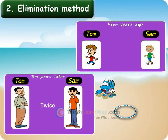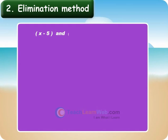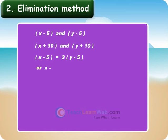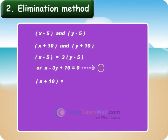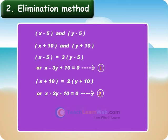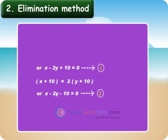Children, consider the present age of Tom as x and that of Sam as y. Five years back, their ages will be x minus 5 and y minus 5. After 10 years, their ages will be x plus 10 and y plus 10. Since five years back Tom's age was thrice that of Sam, it can be written as x minus 5 equals 3 into y minus 5, or x minus 3y plus 10 equals 0. Let it be equation 1. Now let us solve these two equations using the elimination method.